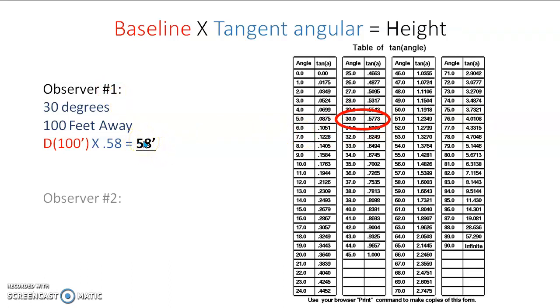Let's ask observer number two what they found. Remember the angle? 16 degrees. So then we go over there. We look up 16 degrees on the chart. Here it is right here. And the number is 0.2867. And we can raise it to 0.29 if we want.